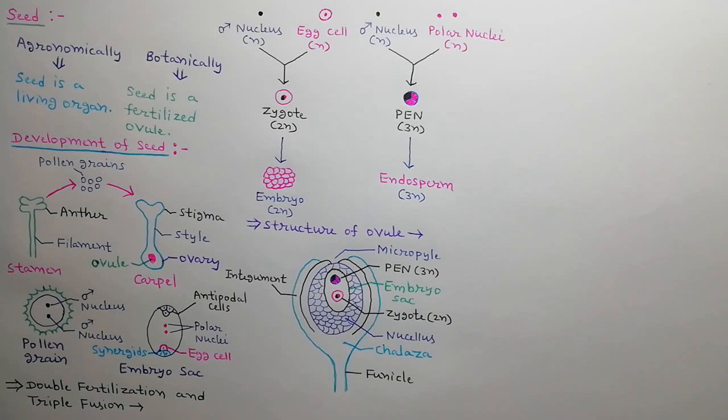In structure of ovule, embryo sac is the main part. Just after fertilization, embryo sac contains triploid PEN and diploid zygote. Other parts of ovule are micropyle, integuments, nucellus, chalaza, and funicle.